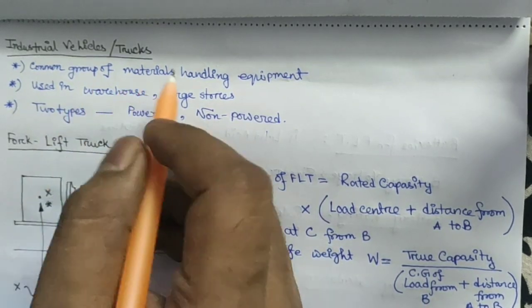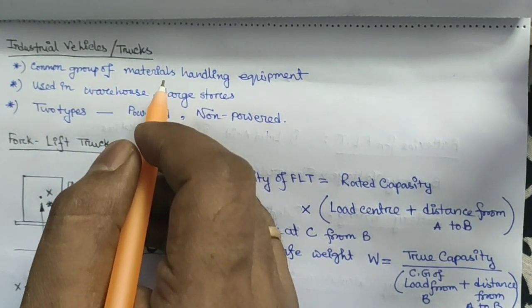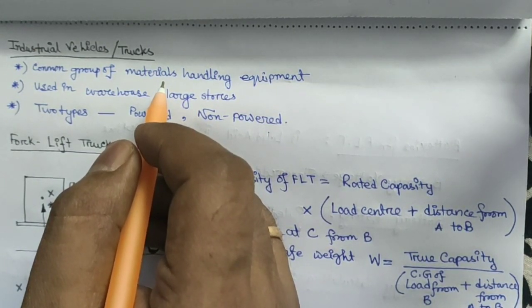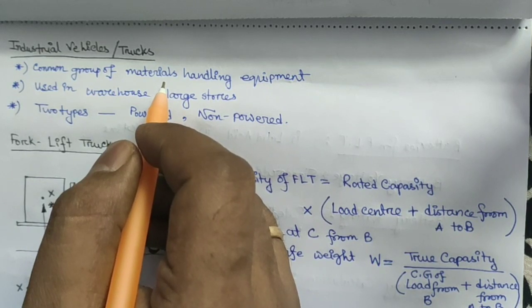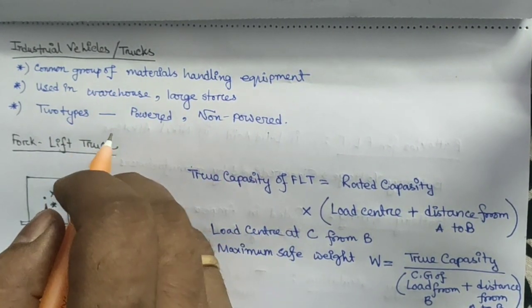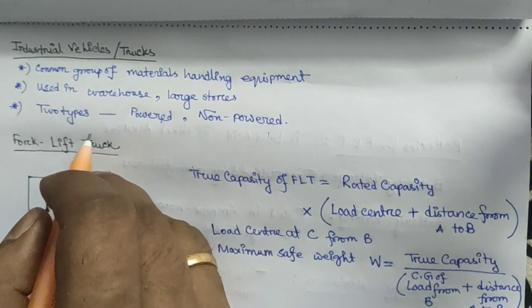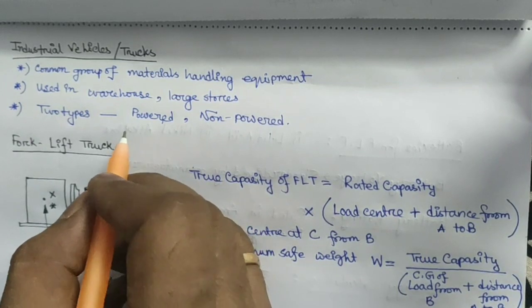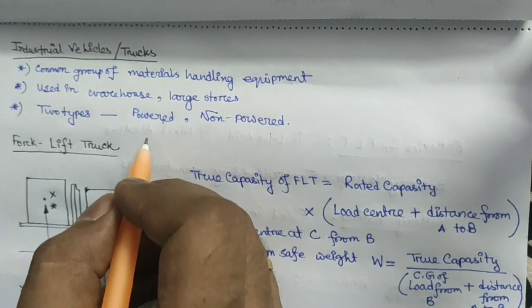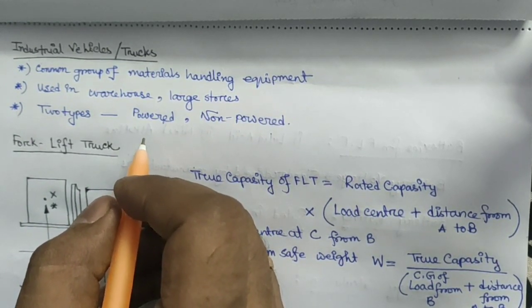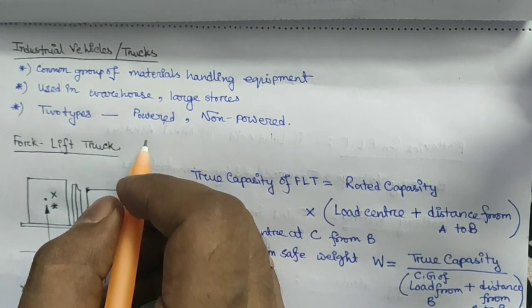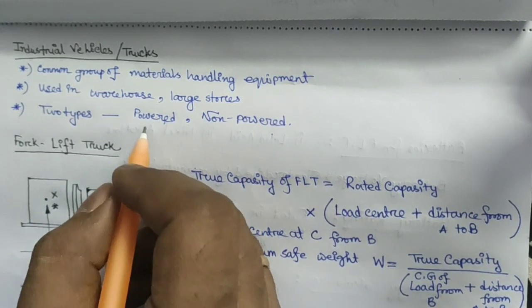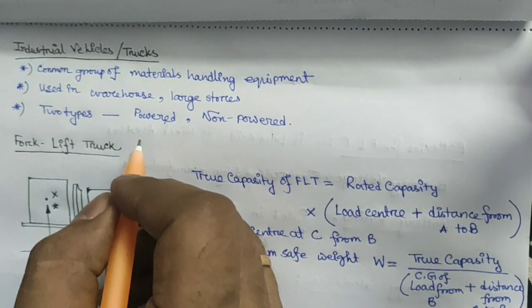The adjective 'industrial' is used to differentiate from normal vehicles like buses, lorries, and trucks used for transportation of men, livestock, or goods. Industrial vehicles are differentiated into two types: power trucks and non-power trucks. Power trucks are further differentiated into three parts: the normal power truck, the forklift truck, and the tractor — all three are known as power trucks.